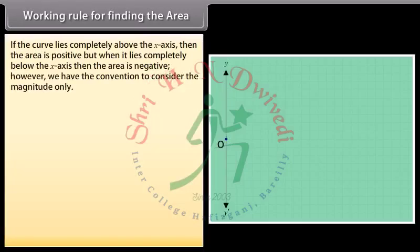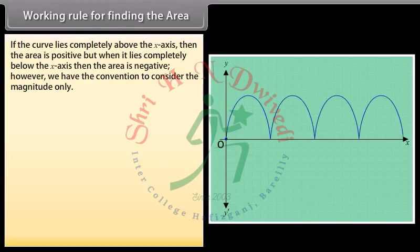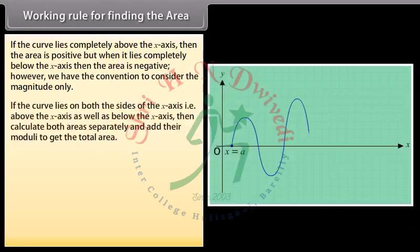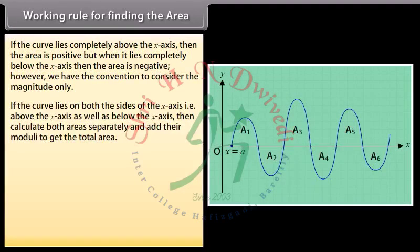If the curve lies completely above the x-axis, then the area is positive. But when it lies completely below the x-axis, then the area is negative. However, we have the convention to consider the magnitude only. If the curve lies on both sides of the x-axis — above as well as below — then calculate both areas separately and add their moduli to get the total area.